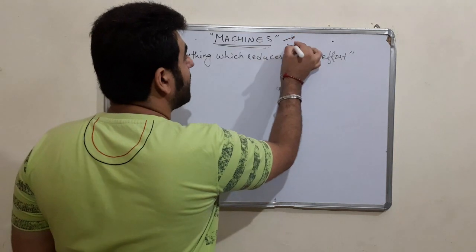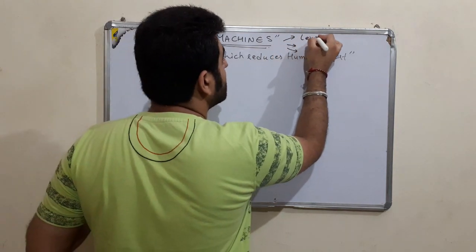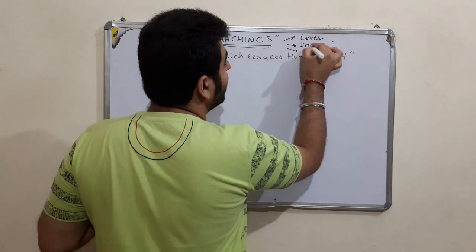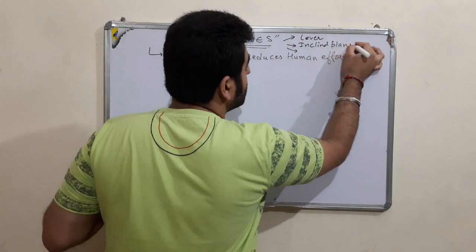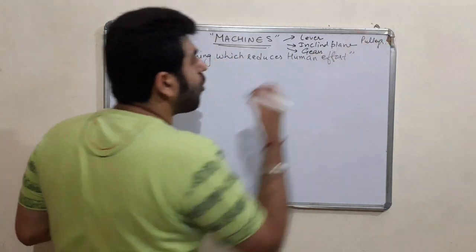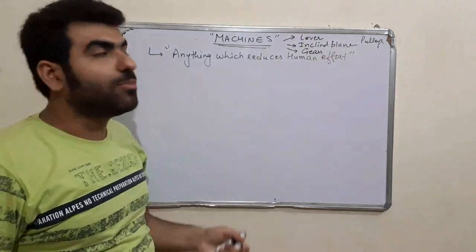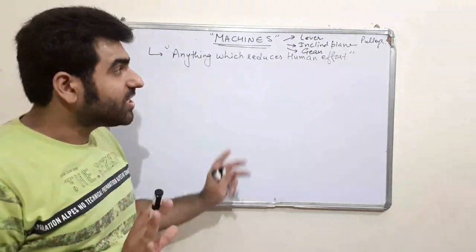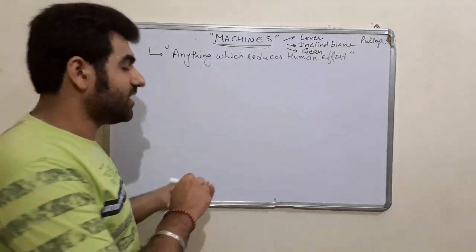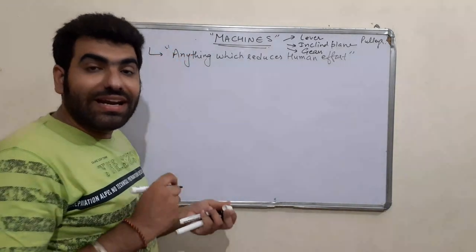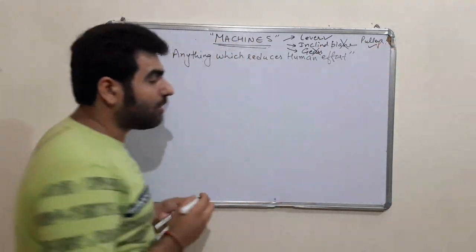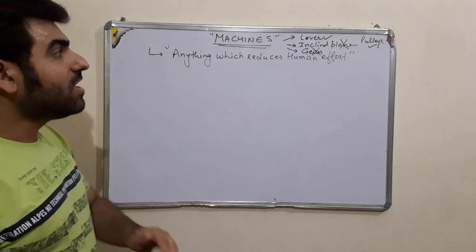Machines can be of many types. A lever is also a machine, then we have inclined planes, gears, and pulleys. All of these — levers, inclined planes, gears, and pulleys — are examples of machines. However, in the latest syllabus the inclined plane and gears have been removed, so in this chapter we will only be discussing levers and pulleys.